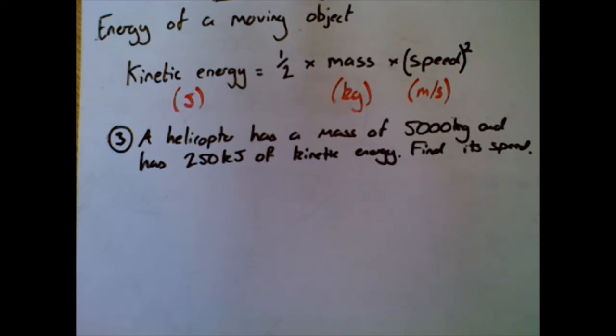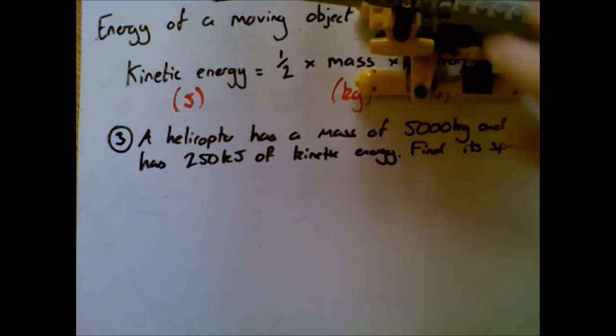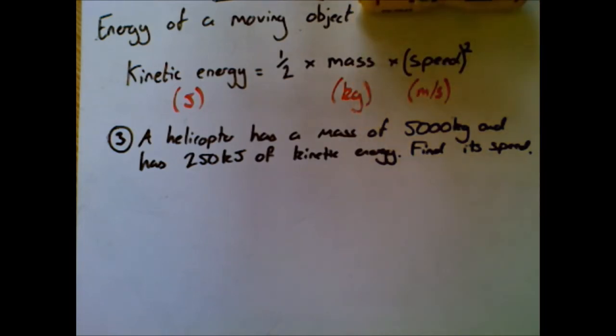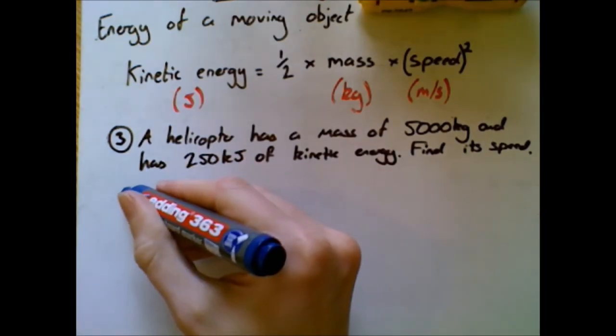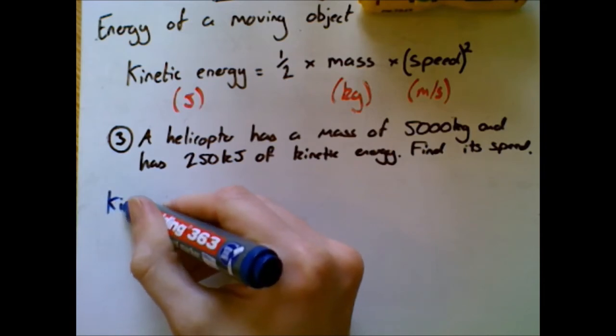And as if by magic, there it is. Now, back by popular demand, here is our helicopter. The information we've got here: it's got a mass of 5000 kilograms, 250 kilojoules of kinetic energy, find its speed. Again, a few things that we're going to need to look at carefully here, but as you know, what I'm going to do now is write out the formula.